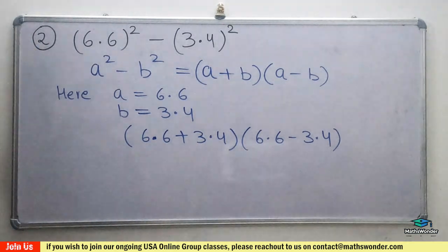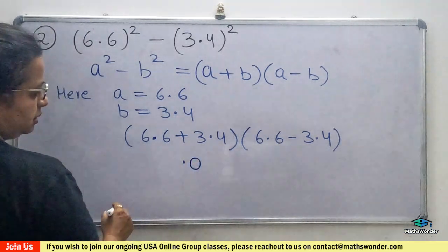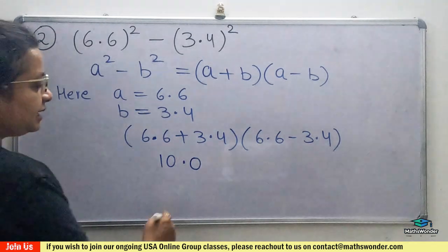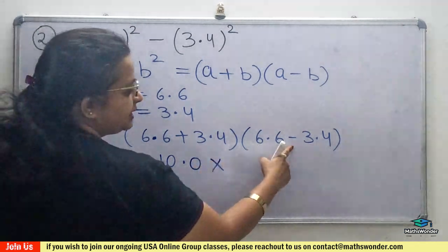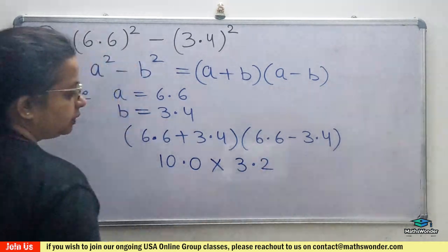Yeah, first do that. It's going to be 10, yes. 10 times (6.6 minus 3.4 is 3.2).